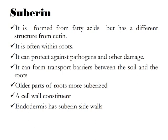Suberin is formed from fatty acids but has a different structure from cutin. It is often found within roots and can protect against pathogens and other damage. It can form transport barriers between the soil and the roots. Older parts of roots are more suberized. Suberin is a cell wall constituent, and the endodermis has suberized side walls.